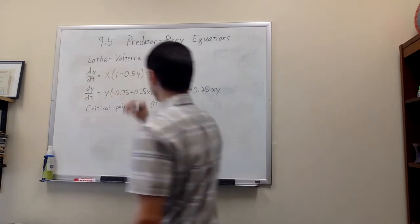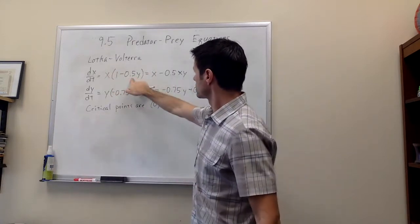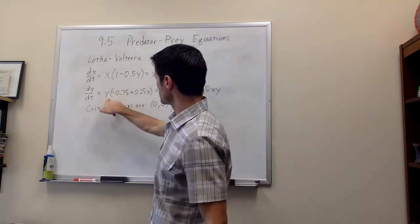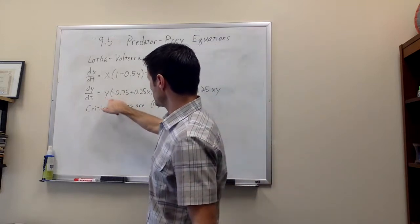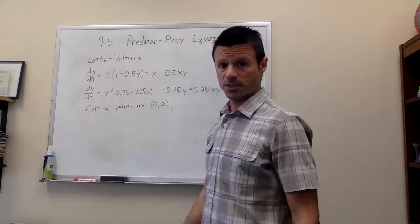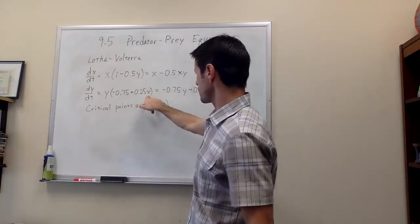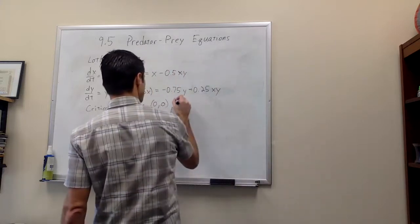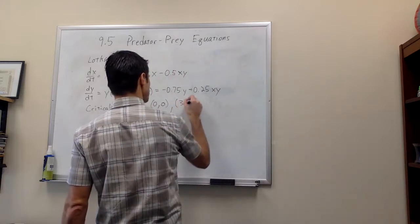Another critical point is, if y is 2, notice that satisfies the first equation. So I plug y equals 2 into the second equation. Now what's in parentheses must be 0. So you can see that if x is 3, we get 0 in parentheses. So the other critical point is 3, 2.